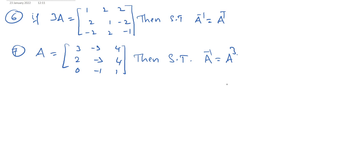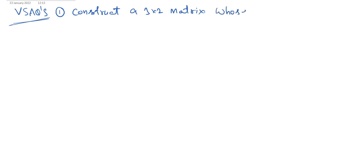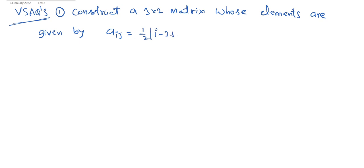These are the SAQ problems in matrices. VSAQs — very short answer type questions. First one: construct a 3×2 matrix whose elements are given by a_ij = (1/2)|i − 3j|.